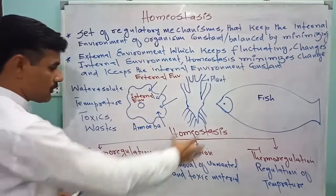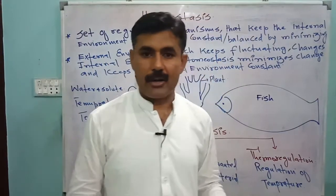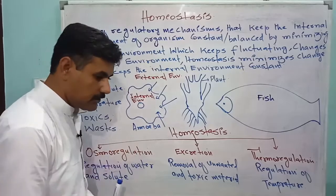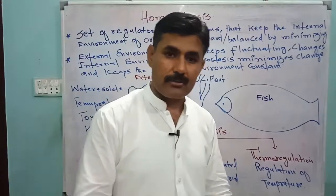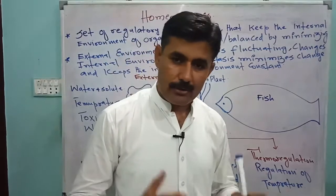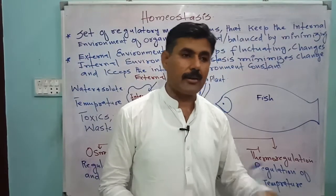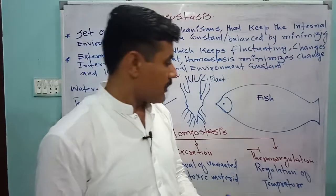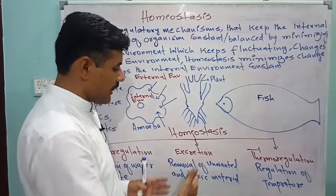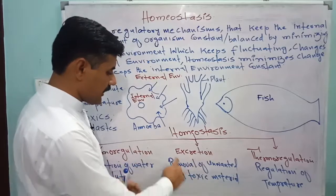There are three important aspects of homeostasis. The first is osmoregulation — organisms maintain their internal environment of water and solutes with the help of a process called osmoregulation. The second aspect involves excretion of waste materials such as ammonia, urea, uric acid, carbon dioxide, and oxygen. These unwanted materials and toxic nitrogenous wastes are removed from the body by a process called excretion.